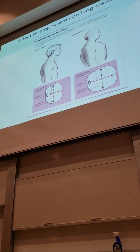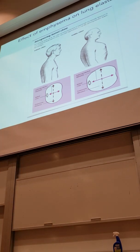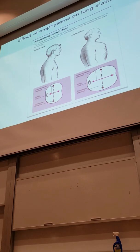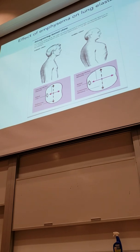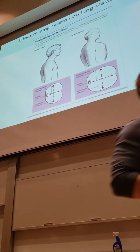Somebody who has emphysema noticeably will have a large chest — this is called barrel chest. And it doesn't only have to be from cigarettes, but that's the most common cause. The chest gets very large, and particularly you can tell in this anterior-posterior dimension. The anterior-posterior dimension — the pink arrow here — is what gets larger.